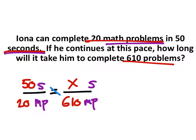So most people prefer to solve these using cross-multiplication. So if I cross-multiply these two, I've got 50 times 610, and this should be equal to 20 times the x, which would be the other cross.